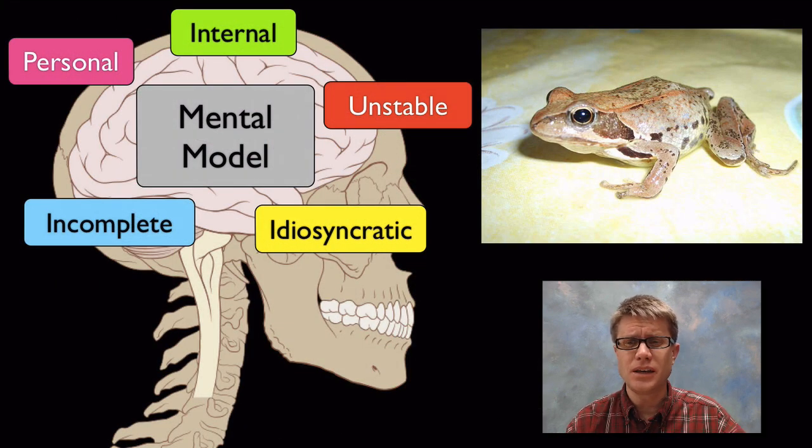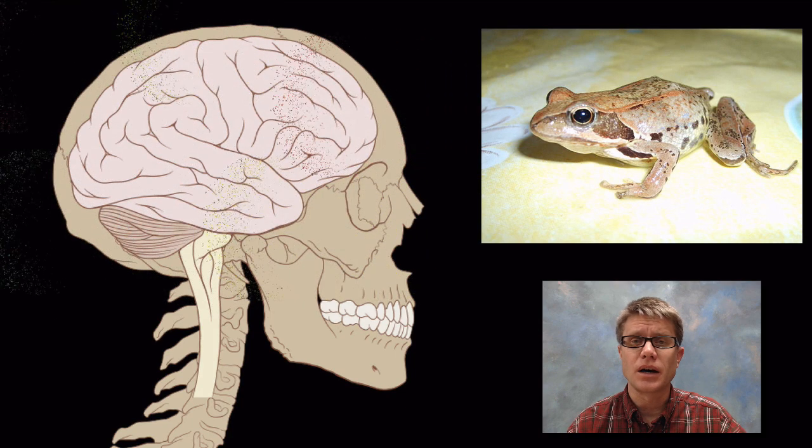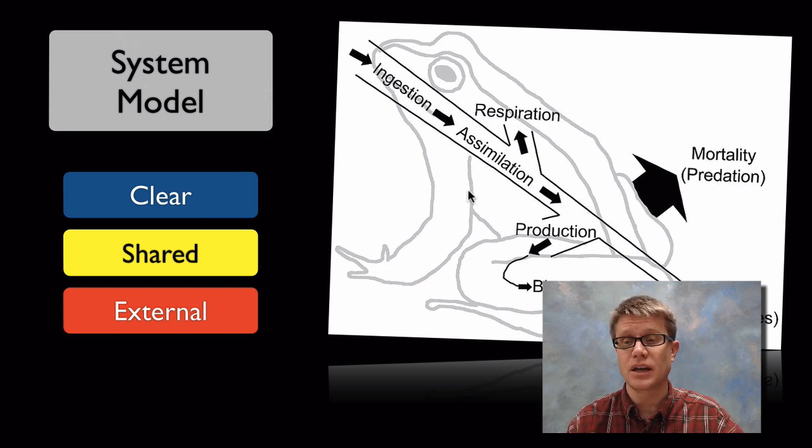So how does a frog eat? Well you might have a mental model of how that works. But the problem with a mental model is that it's just yours, it's internal, unstable, it's incomplete, and it's going to be different in every one of us. We don't use mental models when we're talking about science or studying systems. What we use is called a system model. A system model is simply a way that we understand how a system works. The nice thing about these is that they're clear, shared by everyone and they're also external. So this would be a nice system model for how a frog is taking in energy.